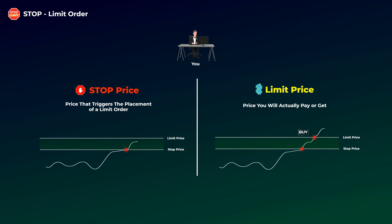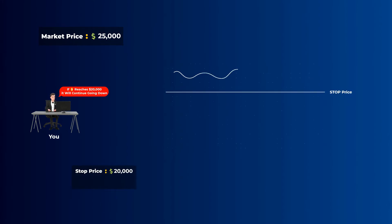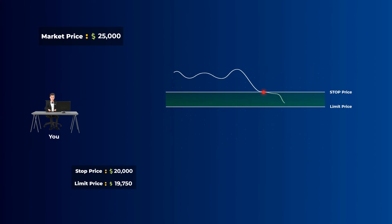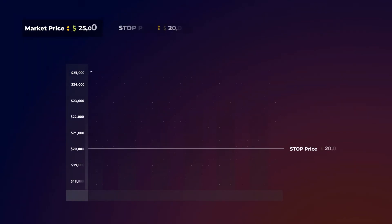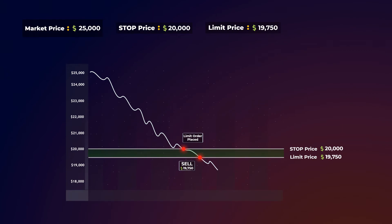Let's start with a sell example. Imagine the current market price is $25,000 and you think that if bitcoin reaches $20,000 it will continue declining, so you want to sell once it reaches $20,000. You place a sell stop limit order with a stop price at $20,000 and a limit price at $19,750 — slightly lower than the stop price — to make sure your limit order gets executed. If you set the limit price very close to the stop price, your limit order may not execute if the price moves down too fast. So when bitcoin reaches $20,000, the stop order is activated and a limit order is placed at $19,750. Your bitcoin will be sold at $19,750 or more if possible, but you will never get less than $19,750.